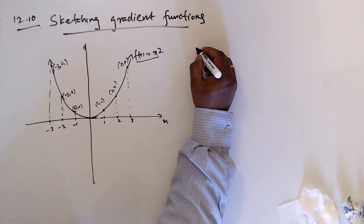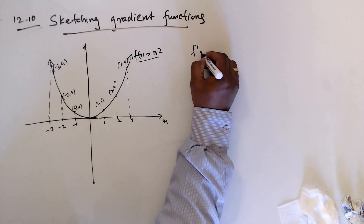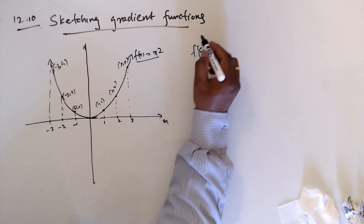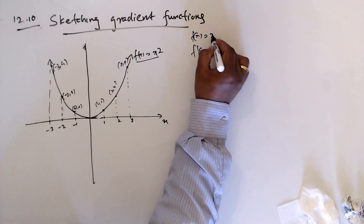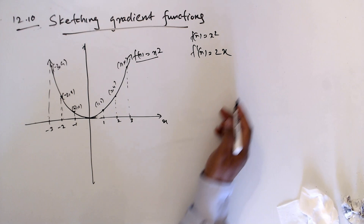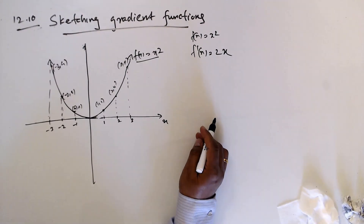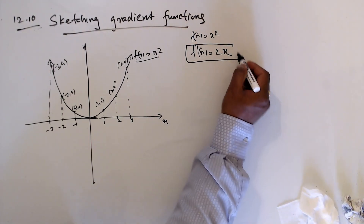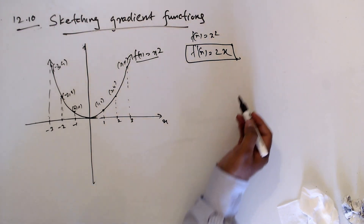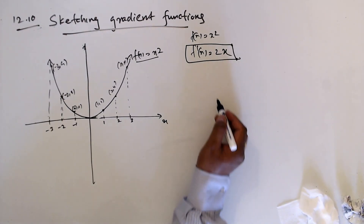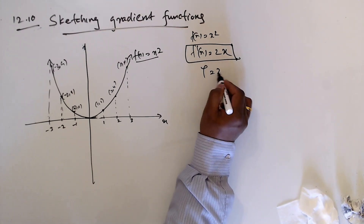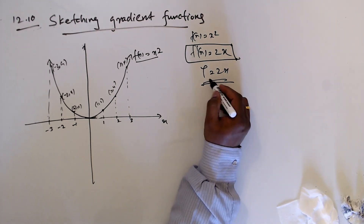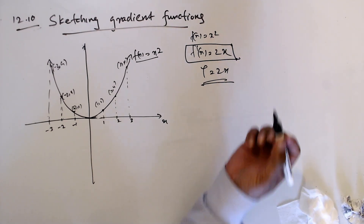We get the gradient function: if f(x) = x², then f'(x) = 2x. This is also a function — you can see this is y equal to 2x, which is the equation of a line.